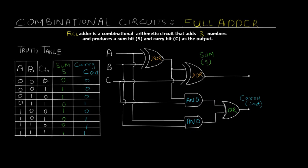For the first case, the addition of three zeros gives us zero sum and zero carry. In the second case, with one as the input at C, the sum is going to be one but there is no carry generated. For the third case, B is one and A and C are zero, so the sum is going to be one and carry is zero. In the fourth case, B and C are one and A is zero, so the sum is zero and carry is one — because one plus one gives you zero as a sum and one gets carried forward.